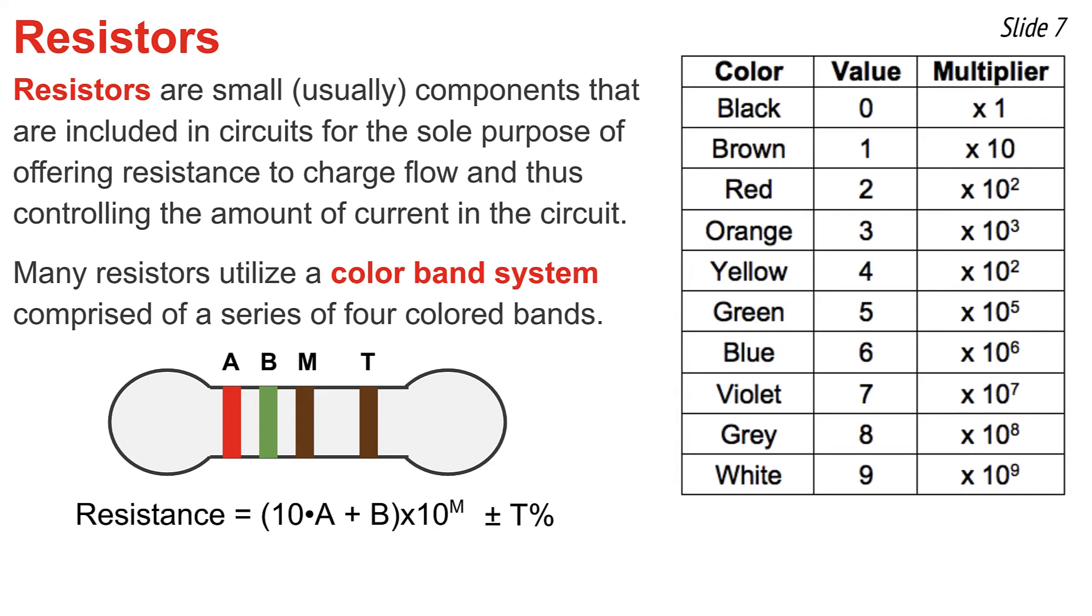Well, let me illustrate how it works with the diagram shown. The first band is colored red. I go to my table and I notice red represents 2, so I'm going to go 10 times 2. The second band is colored green. I go to my table. Green represents 5, so I'm going to go 10 times 2 plus 5. Together, that's 25. The third band, the multiplier band, is colored brown. I go to my table and I look in the multiplier column and that means times 10 to the first. So I'm going to take 10 times 2 plus 5, 25, and multiply it by 10 to the first or simply by 10. That gives me 250 ohms.